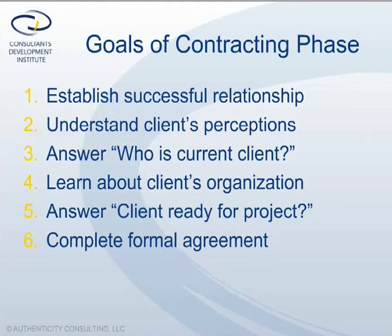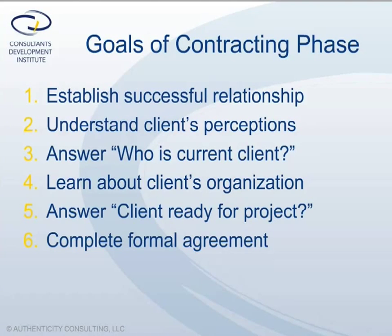The goals for this contracting phase include establishing a good relationship with the client based on openness and trust, and to understand your client's perception of the problem in the organization. This perception may change as you learn more about the problem. You'll want to answer the important question: who is the current client? This is probably your official client who signed your check, but you need to be sure. Learn about the client's organization or department, its culture, and how its members prefer to make decisions and solve problems. An important question is whether the client is really ready for the demands of the project. You and your client should complete a formal agreement that you're both willing to sign.